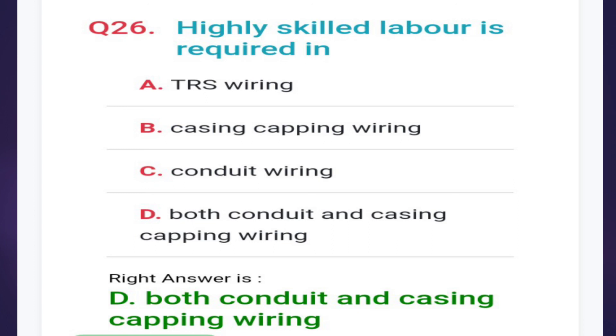Next: highly skilled labor is required in - correct answer is option D, both conduit and casing capping wiring.